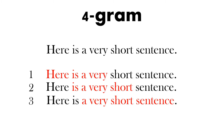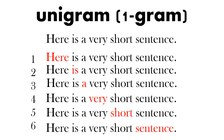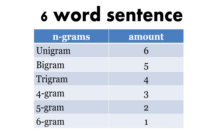So can you see a pattern? A unigram is just one word, so if there are six words there will be six unigrams. In a six-word sentence there were six unigrams, five bigrams, four trigrams, three fourgrams, two fivegrams, and one sixgram. The number of n-grams reduces by one every time we go up one gram size. So when there is one word per gram — a unigram — there are six possibilities, and this goes down until we reach the full sentence length, which gives just one sixgram.